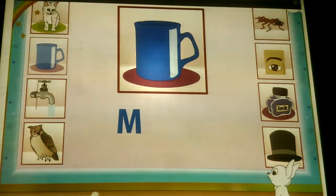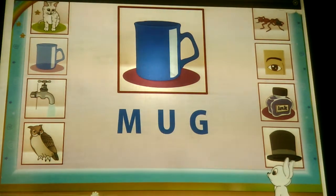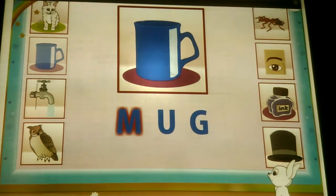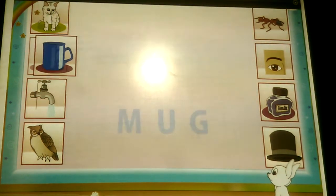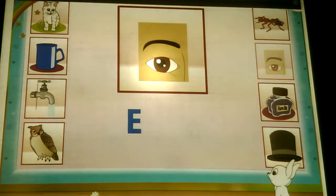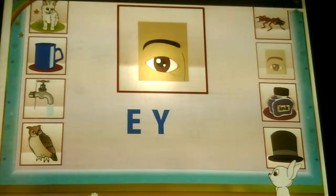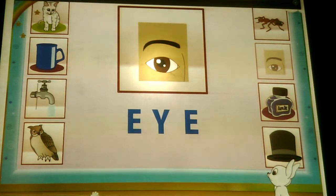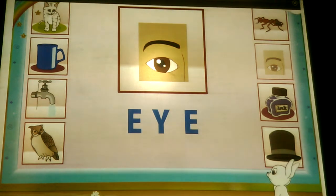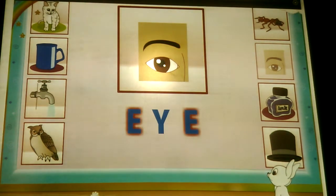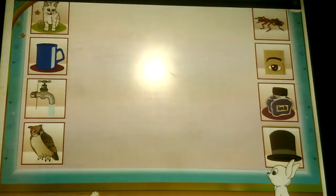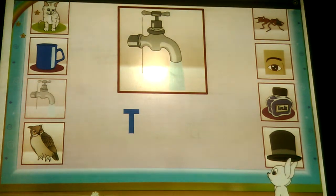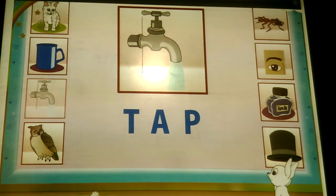M, U, G — Mug. M is not a vowel. E, Y, E — Eye. E is a vowel. T, E, E, B — Tab. T is not a vowel.